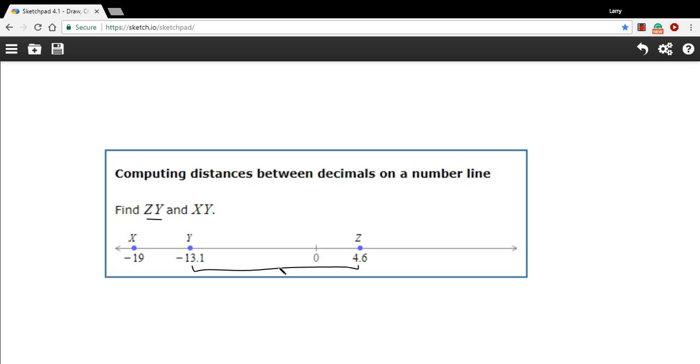The foolproof method for finding the distance between points on a number line is just to subtract them and take the absolute value. And it doesn't even matter what order you do that in.